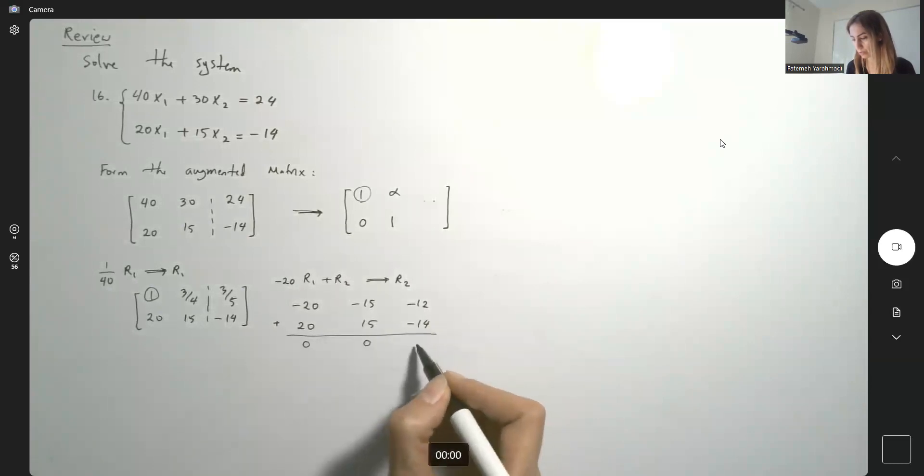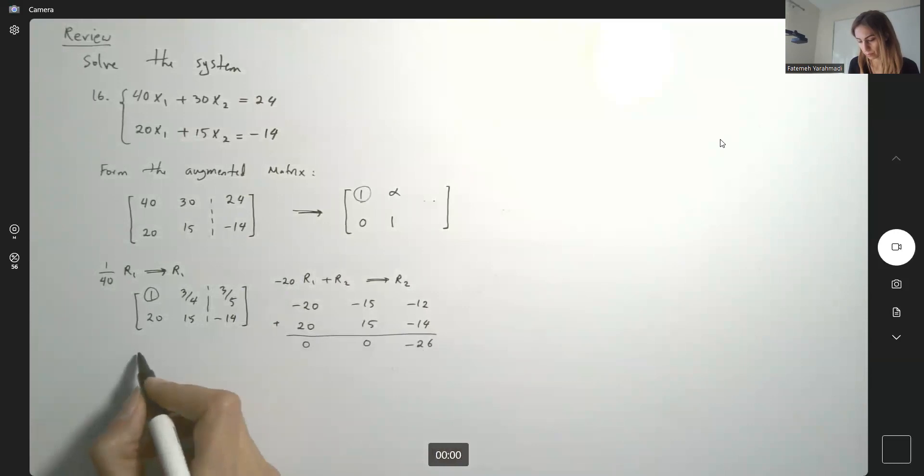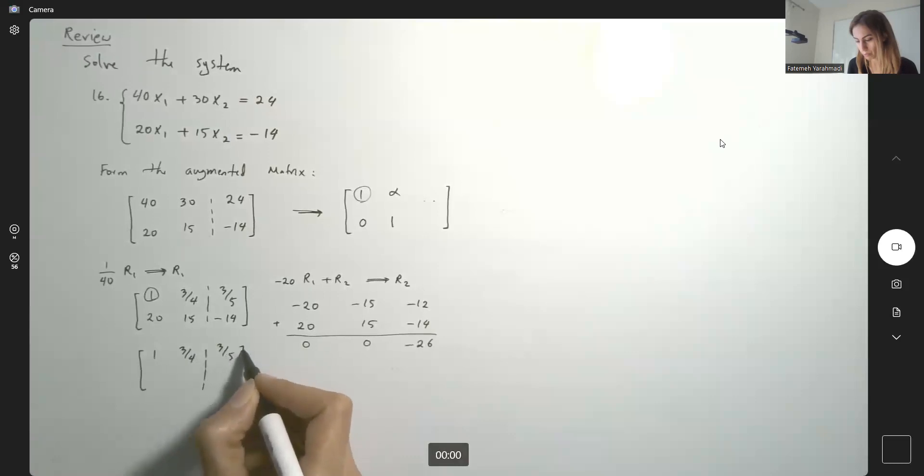We end up with 0, 0, and here you have negative 26. So, your new matrix is 1, 3 fourths, 3 over 5, 0, 0, and negative 26.